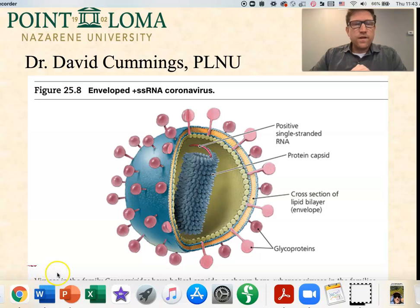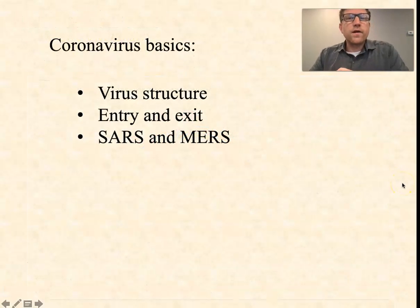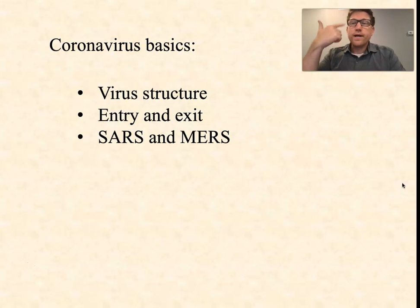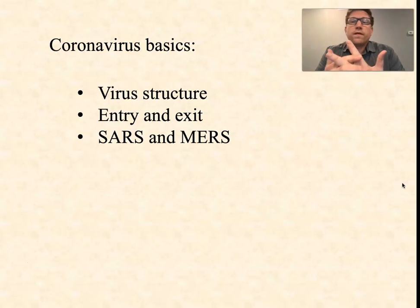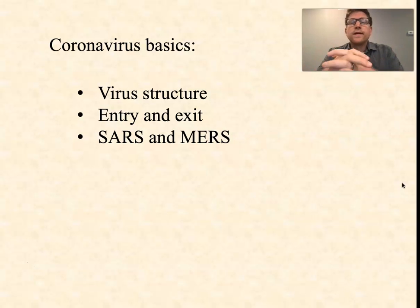In this video, we're going to talk about some basics of coronaviruses in general. Typically, coronaviruses infect us in the upper respiratory tract, and they cause what we think of as the common cold. There are actually hundreds of viruses that cause what we think of as a mild upper respiratory viral infection — we say we have a cold. Coronaviruses are among some of the most important cold viruses.